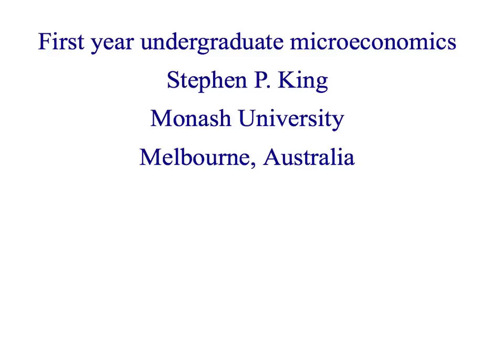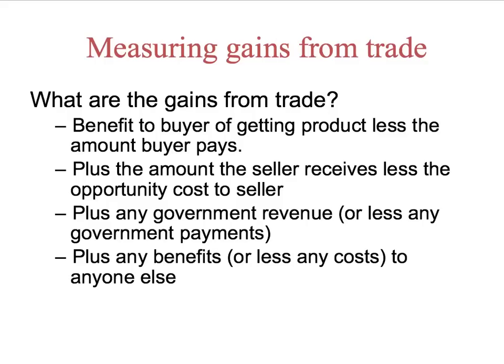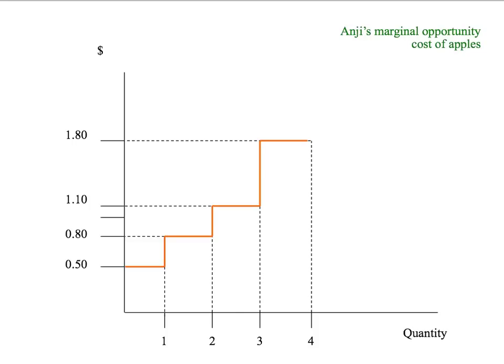Welcome back to First Year Undergraduate Microeconomics. We've been looking at welfare economics. In previous presentations, we've looked at the gains from trade to the buyer. In the current set of presentations, we're looking at how to measure a seller's gains from trade. Last time we noted that we call those gains from trade to a seller 'producer surplus.' How do we measure producer surplus?